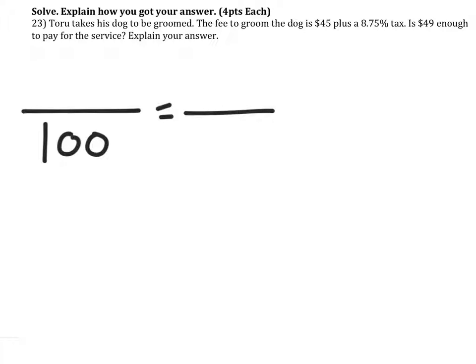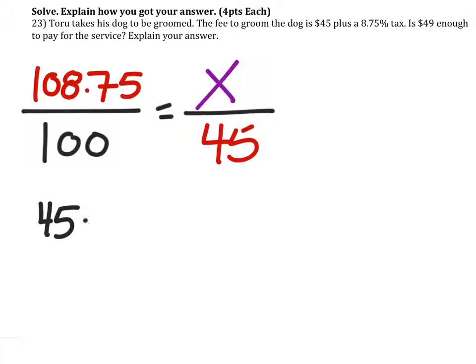So here's our percent proportion. Toru is going to pay 108.75% of the original $45. We will be solving for X right here. So we got 45 times 108.75 divided by 100.